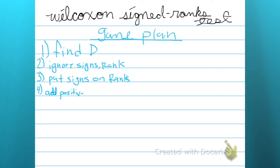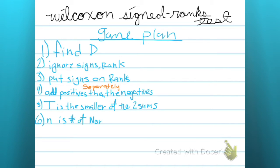And we're gonna add the positive ranks, and we're gonna add the negative ranks, and you do that separately. Then, T is the smaller of the two sums. That's just how we're choosing them. N is the number of non-zero pairs. Well, that's the difference of the pairs, that is.